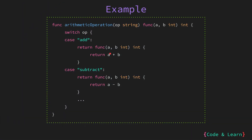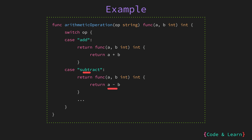Next let us look at an example of returning a function from another function. Here I have an arithmeticOperation function which takes an operation string and returns a function that takes two integer values and returns an integer value. Inside, we switch on the op string. In case it's add, we return a function that adds two values. In case the operation string is subtract, we return a function that subtracts the values passed in. That's basically how you can return a function from another function.